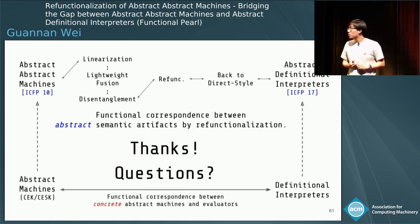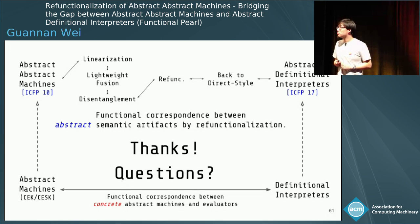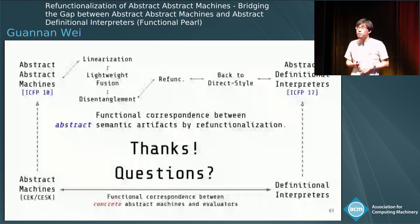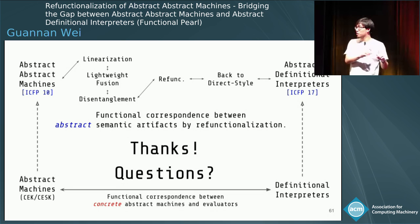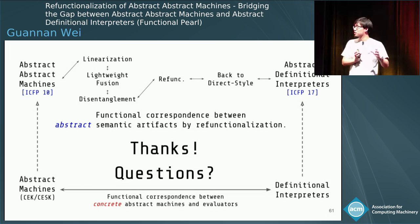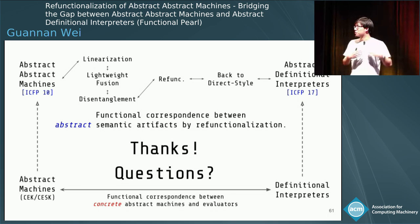Q: Can you talk about the performance of the resulting definitional interpreter and how it relates to the original abstract machine? A: We didn't evaluate performance in the paper. But according to previous work comparing big step and small step abstract interpreters, big step is usually a little faster because you don't need to construct intermediate states — you just use the stack structure of the defining language.